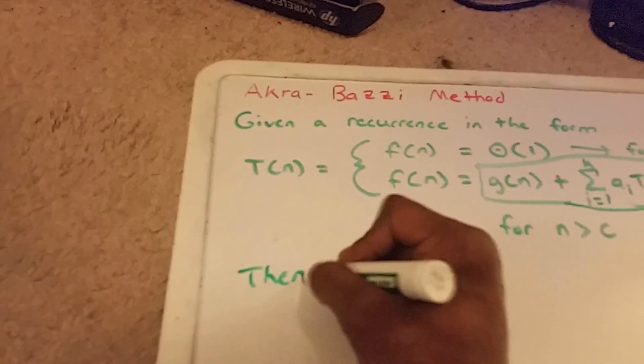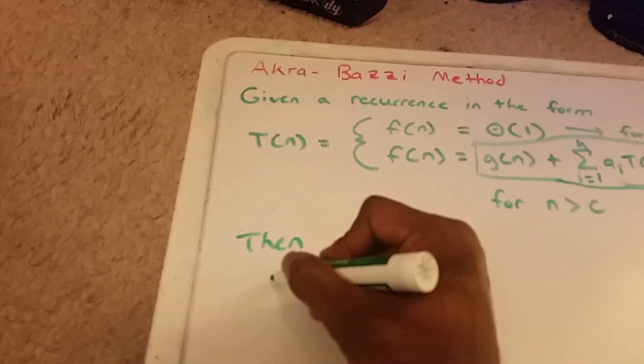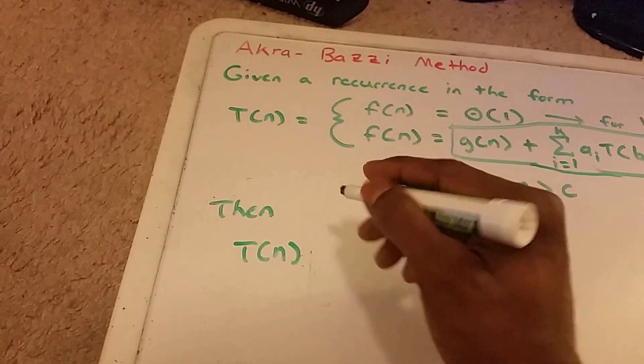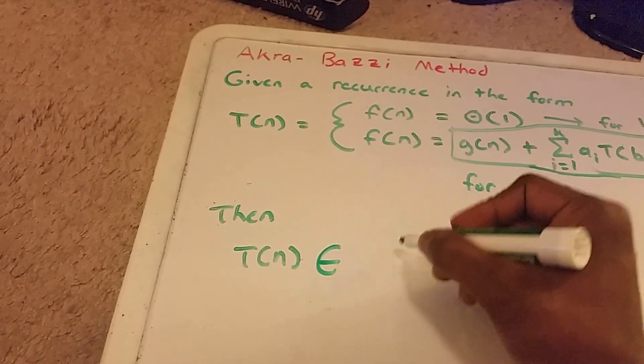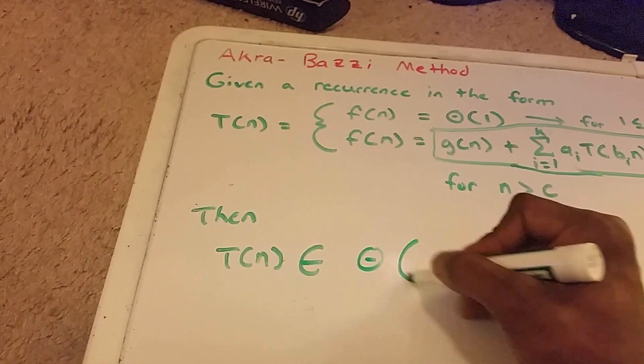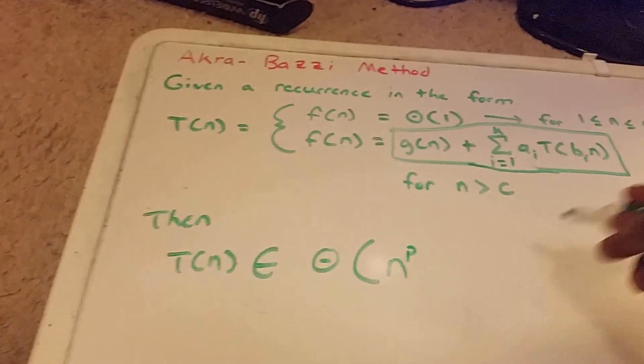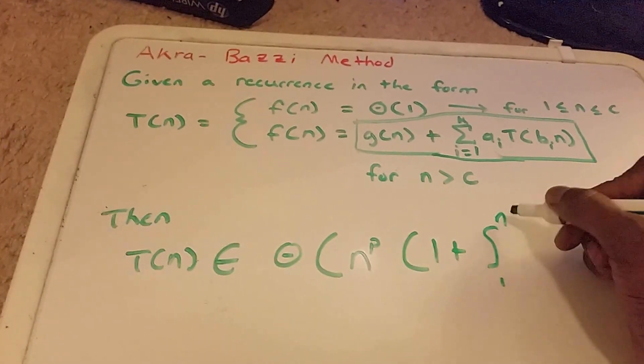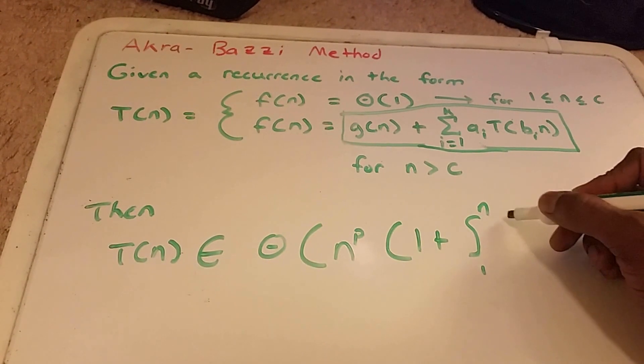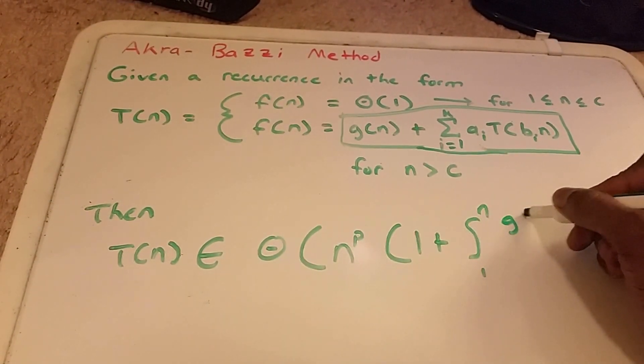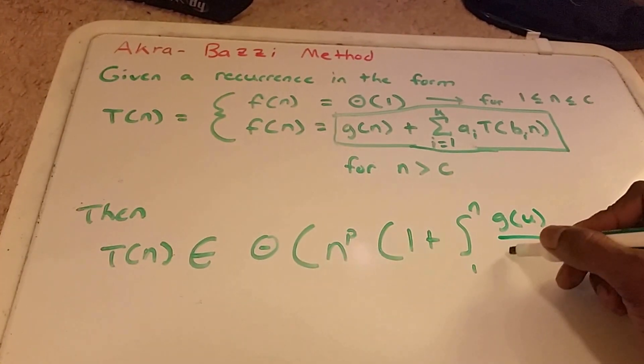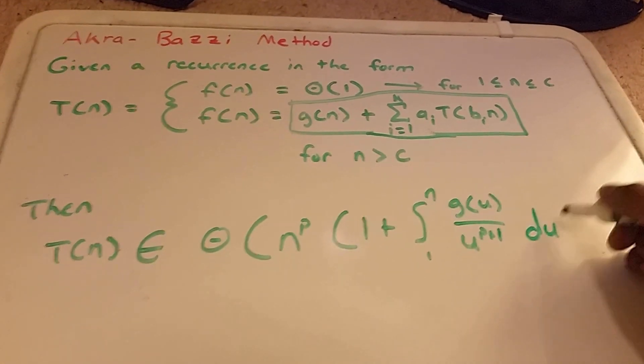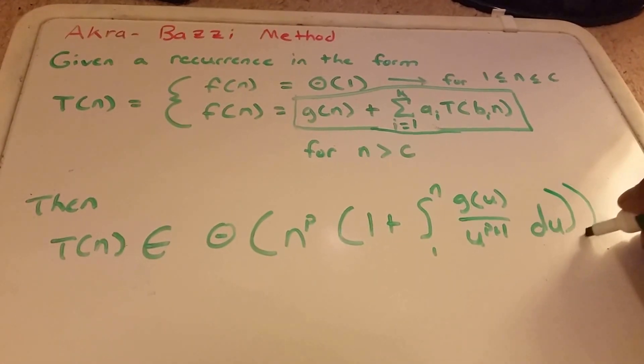So if all that's true, then our T of n, I put equal to, we really need to put belongs to, belongs to theta of n to the p times 1 plus the integral from 1 to n of g of u over u to the power of p plus 1 du in parentheses.